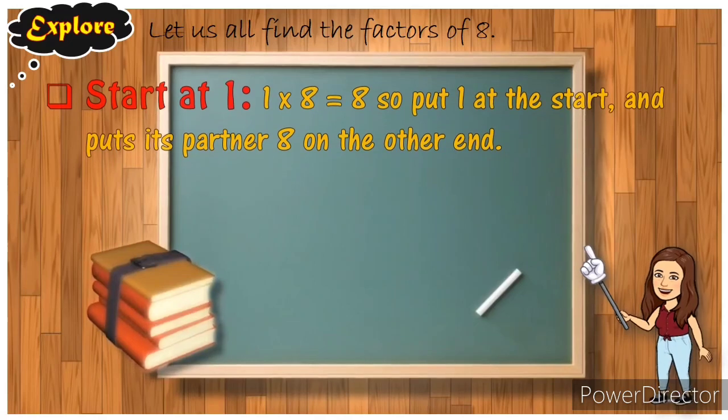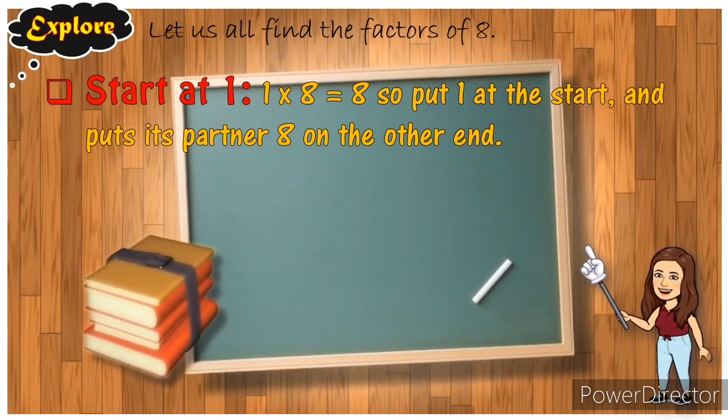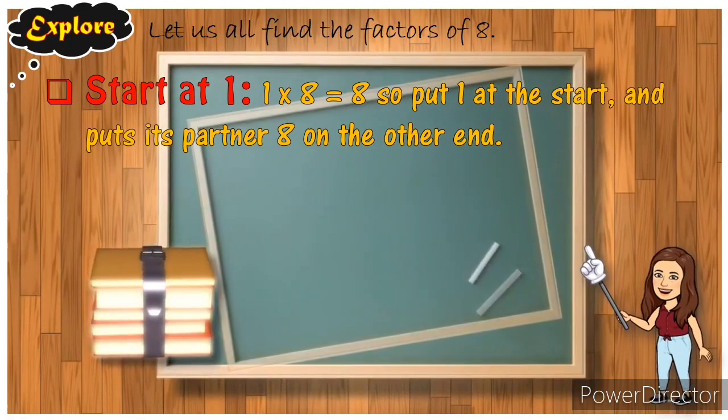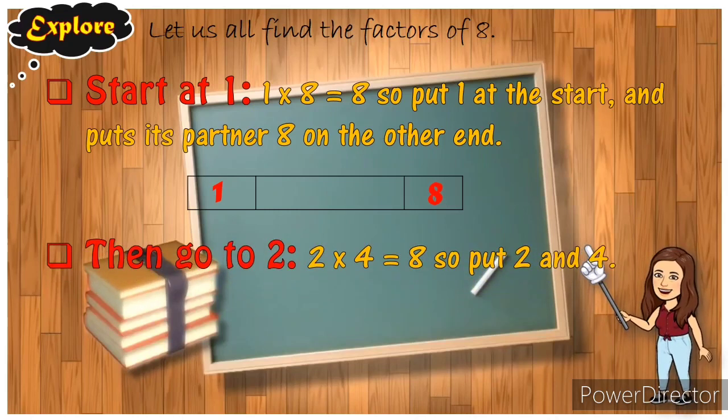Let us all find the factors of 8. For example, let's find the factors of 8 by following the steps. Start at one. Find a number multiplied by one where the product is eight. One times eight equals eight. So put one at the start and put its partner eight on the other end. Let's draw a table like this. Since one multiplied by eight has a product of eight, let's put one at the start and put eight at the end of the table.